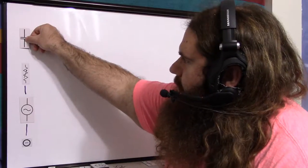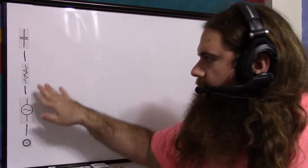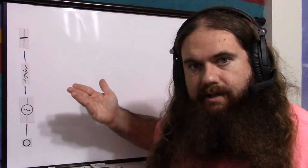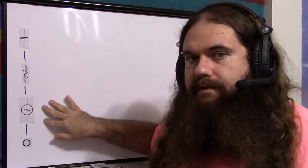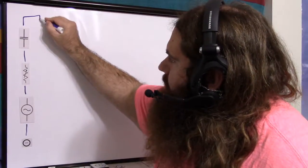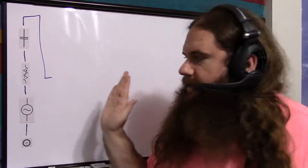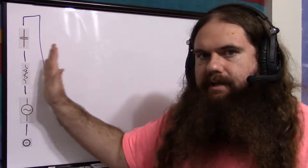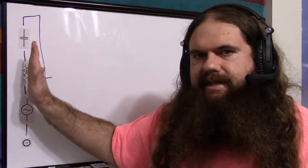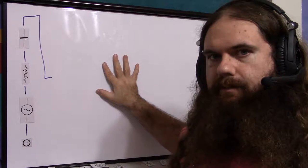And then a capacitor. This capacitor has the minor role of removing any bias on the signal — there shouldn't really be a bias, but just in case. But it has the major role of making sure that the bias we introduce in the amplifier doesn't get back into the input. So it DC-isolates the input from the amplifier.